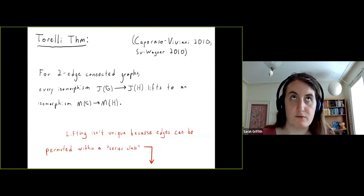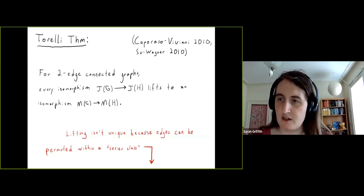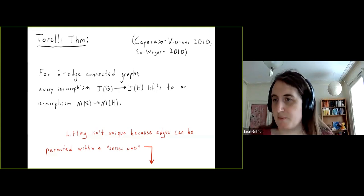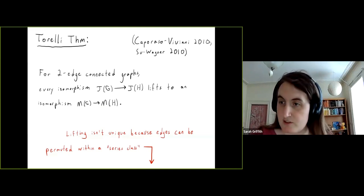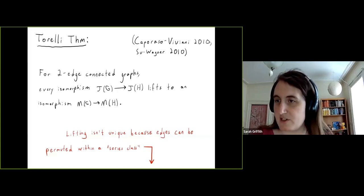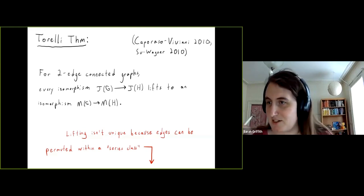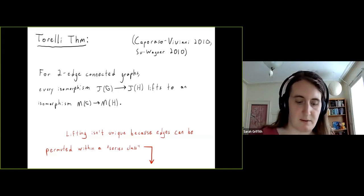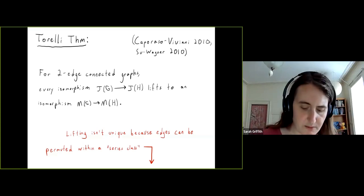The really classical original Torelli theorem is about Riemann surfaces. Each Riemann surface has a Jacobian associated with it, and isomorphisms of Jacobians, along with some extremely important extra data, give you an isomorphism of their associated Riemann surfaces. That's the history this kind of result is coming from.